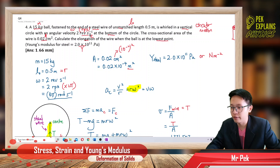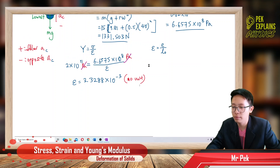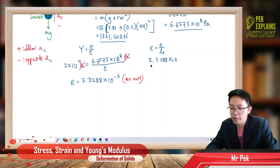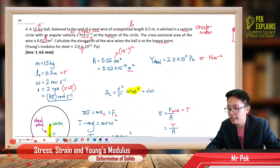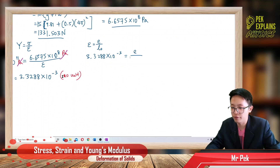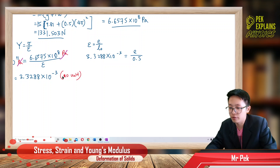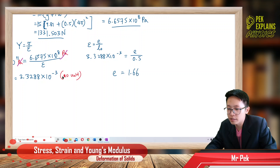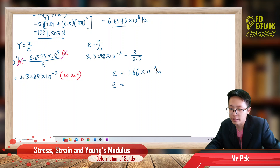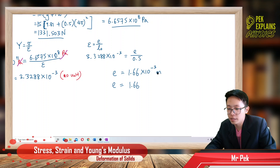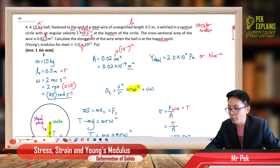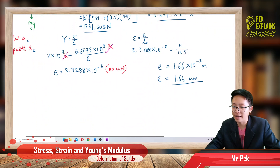Once I have the strain, I can find the elongation of the wire. Strain = elongation / original length, so elongation = strain × original length = 3.3288×10⁻³ × 0.5 = 1.66×10⁻³ meter. Since 10⁻³ is milli, the elongation is 1.66 millimeter. That is the elongation of the steel wire at the lowest point of the circle.